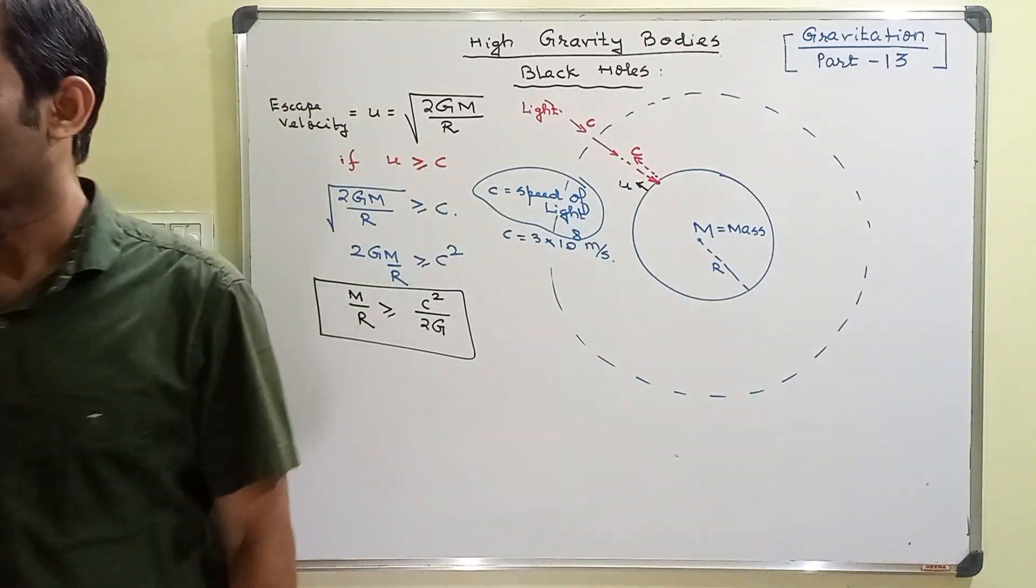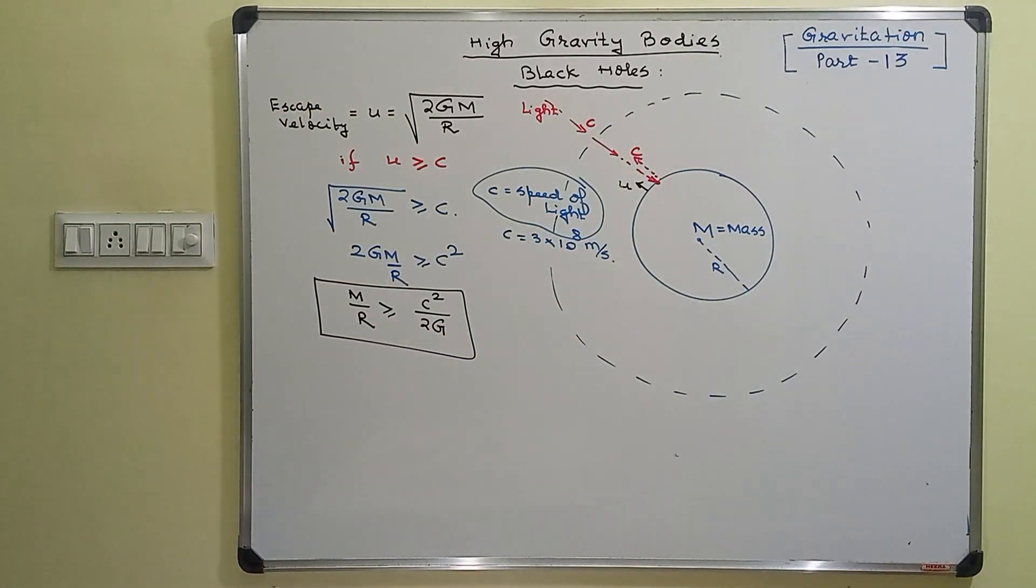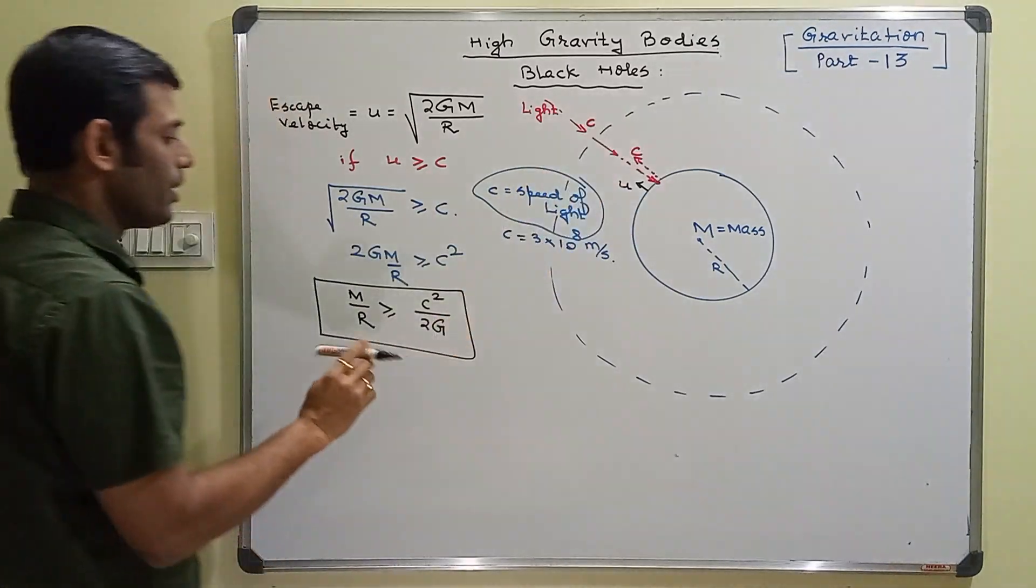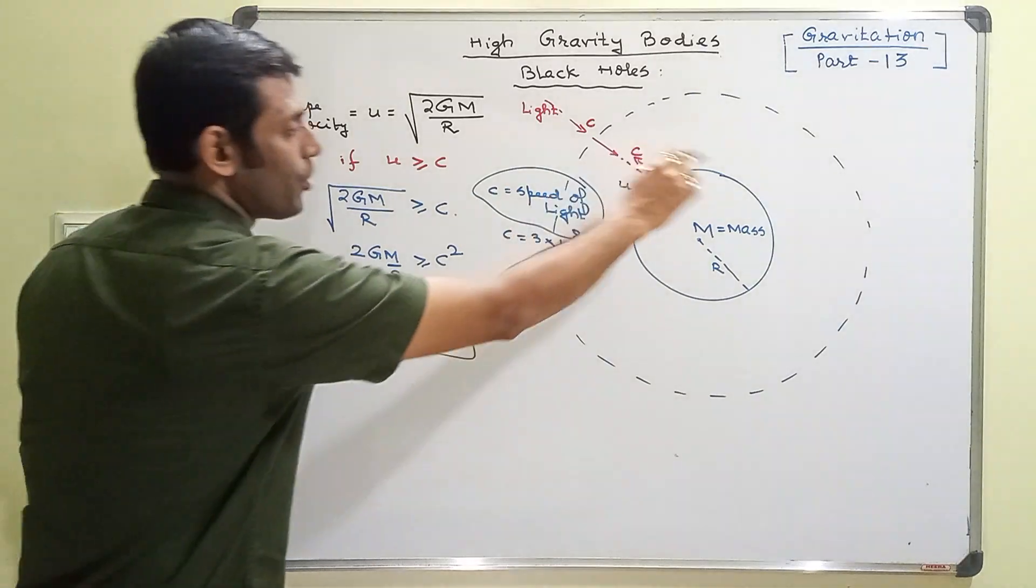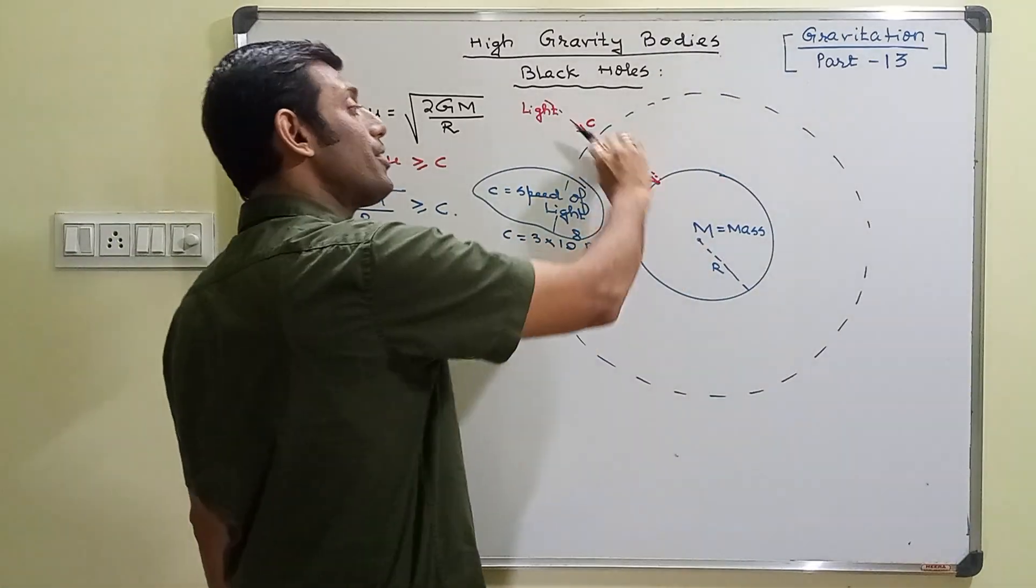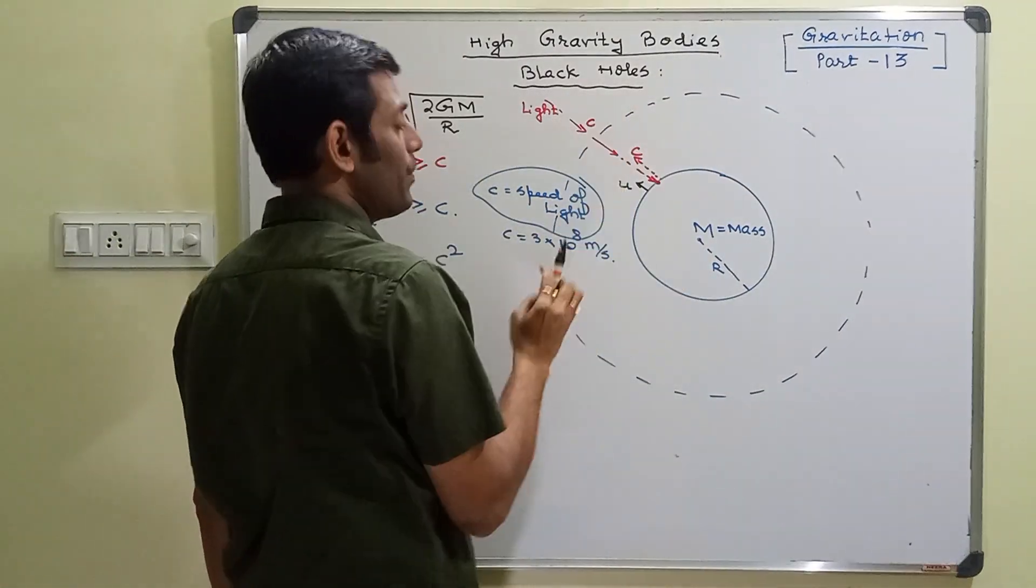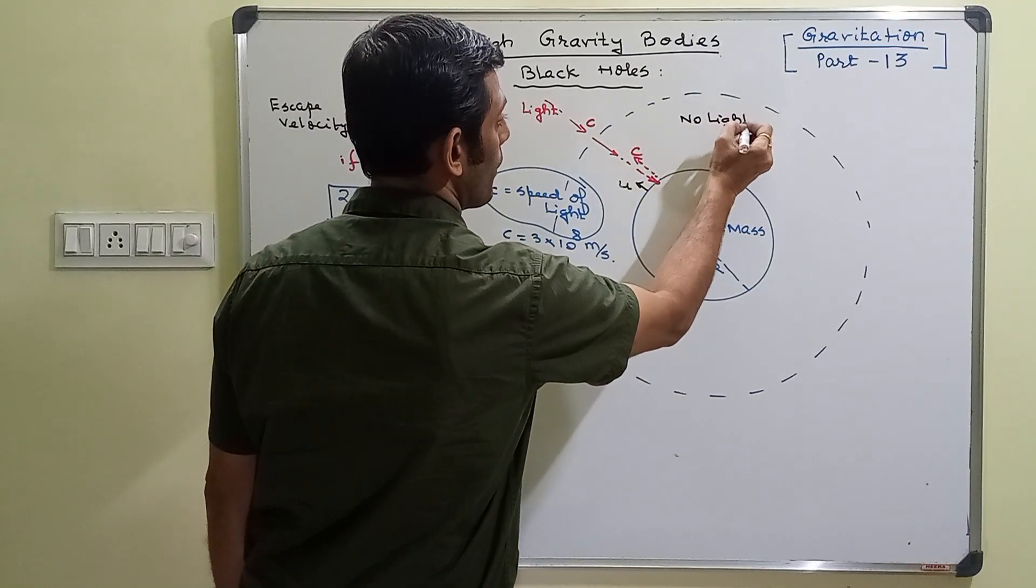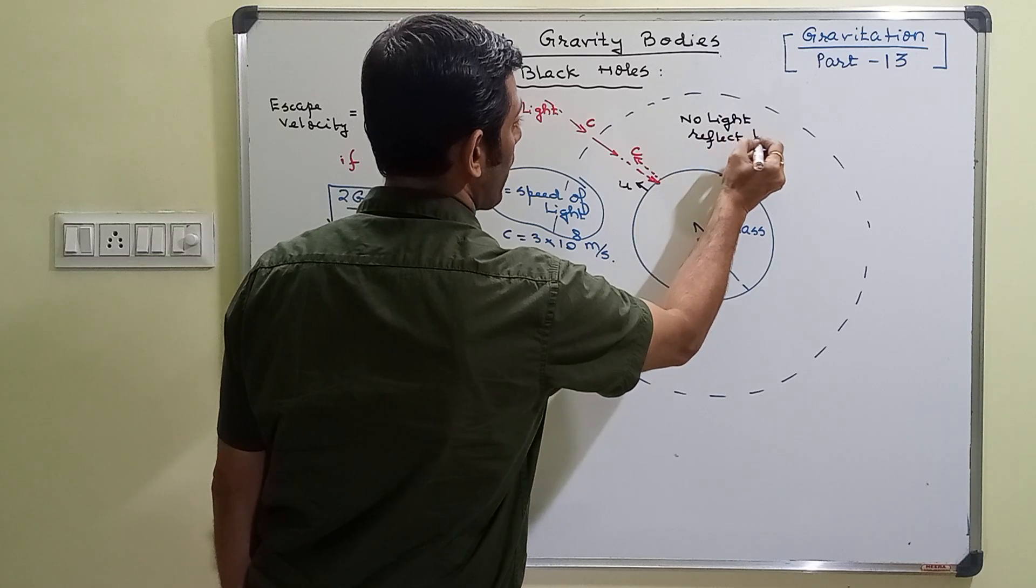You just cannot escape. If your escape velocity is greater than the speed of light, you just cannot escape. That means escaping from this body is impossible and light cannot reflect then. No reflection is possible. No light reflects back.